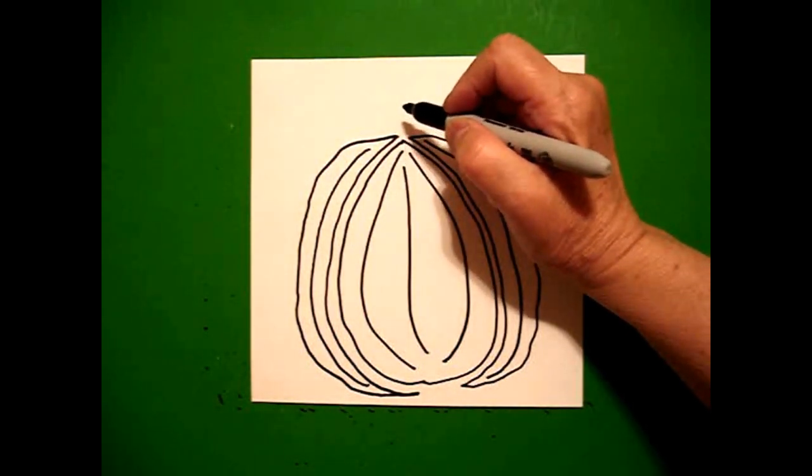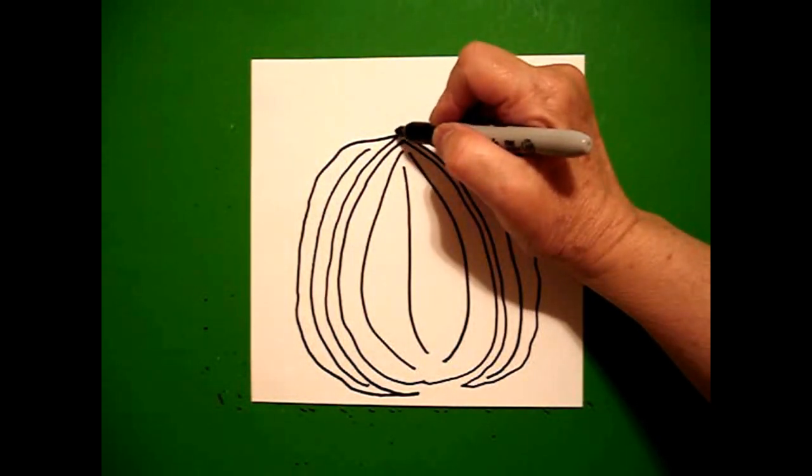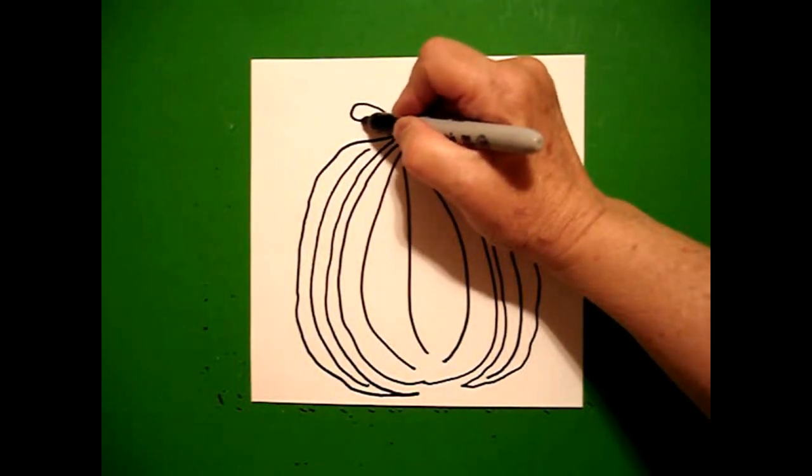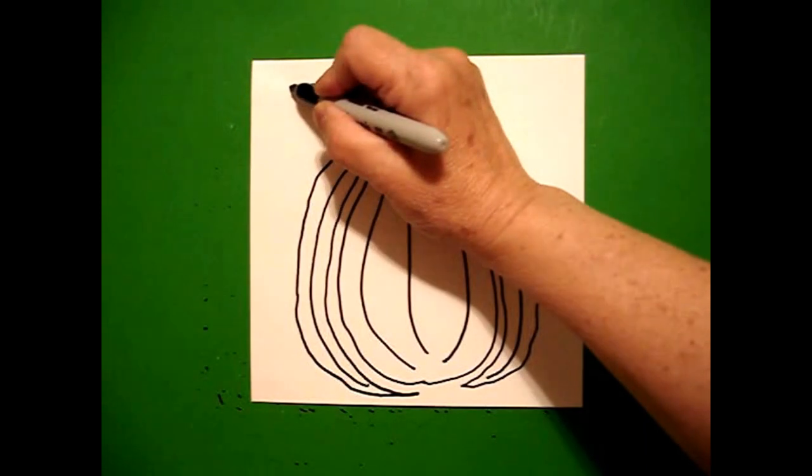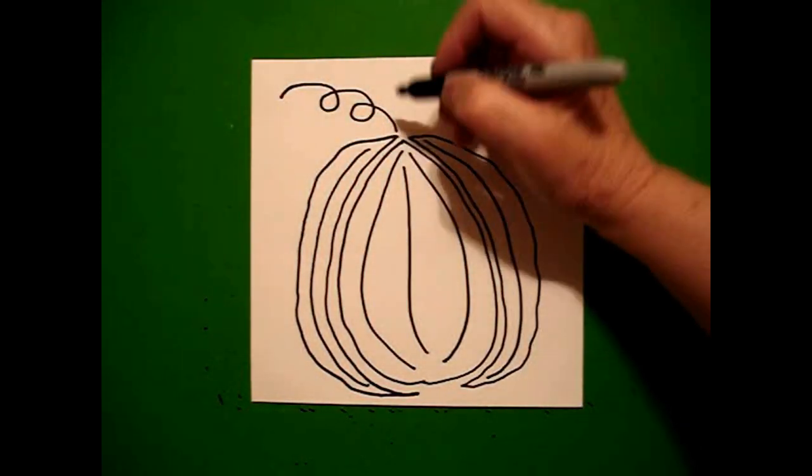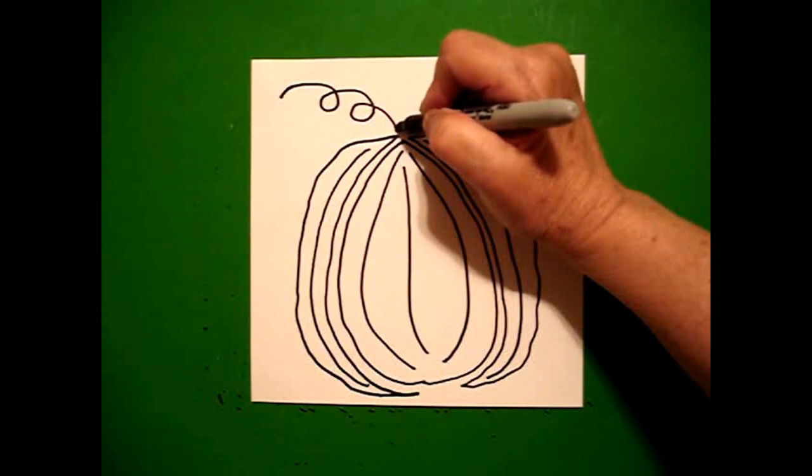So, I come up to the top on the left-hand side, and I'm going to do a spiral. I draw a curved line, spiral, spiral, curved line, and now I'm going to draw those lines again. I come right next to where I started.